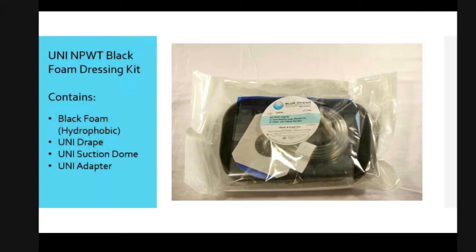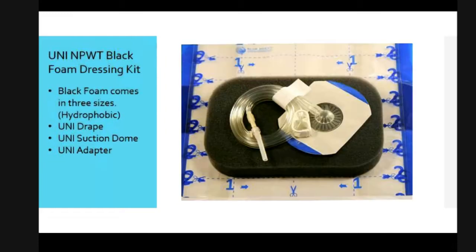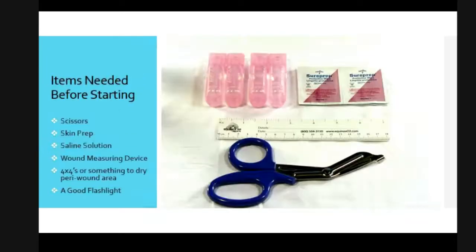So here we have the Uni Negative Pressure Black Foam Dressing Kit. It contains the black foam, the unidrate, the suction dome, and the adapter, which is already fitted on to make it easy. That black foam is hydrophobic, meaning it doesn't like water, and that's why it is such a good conduit to transfer any type of exudate through and out into the canister. Here it is opened — if you notice, there's a great luer lock system, so a nice tight fit. This is our dome, this is our black foam, and this is a very easy one-two-three drape. As a nurse, I absolutely love this drape — it works very well.